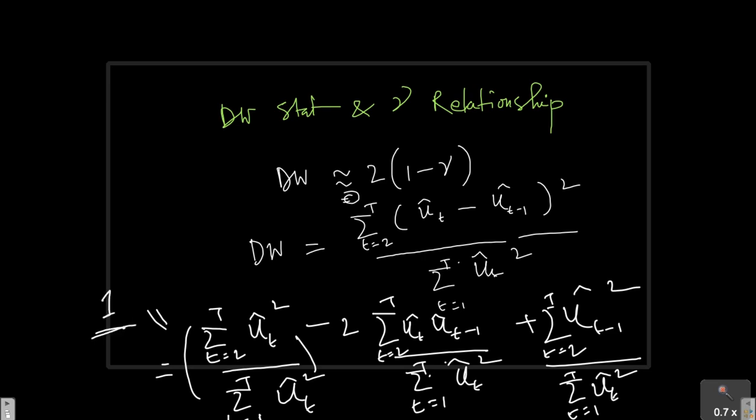Similarly, for this one also, ut minus 1 and ut, if I take the same logic here, I can predict sort of approximate it to 1, okay?